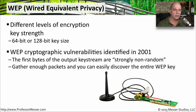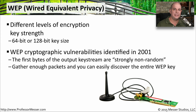Unfortunately, that was in name only. Cryptographic vulnerabilities were found in WEP in 2001. Some of the data being sent over a WEP network was strongly non-random, which is definitely not what you want to keep information private. This means that if you collected enough information from the wireless network, you could piece it together and determine what the key actually was. And once you had the key, you had access to everything on that wireless network.